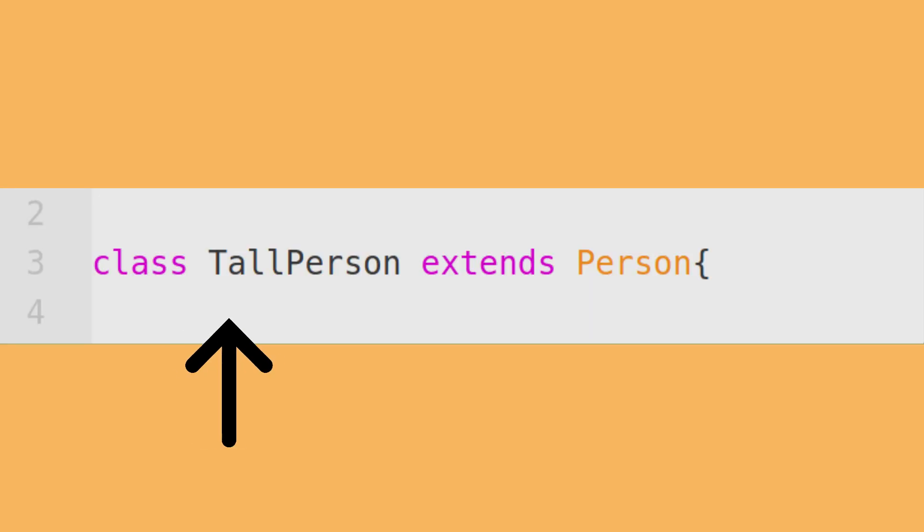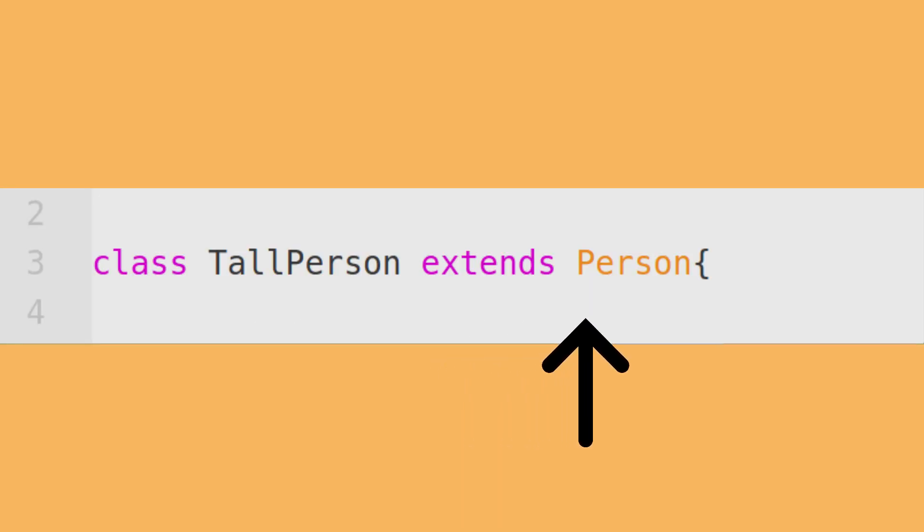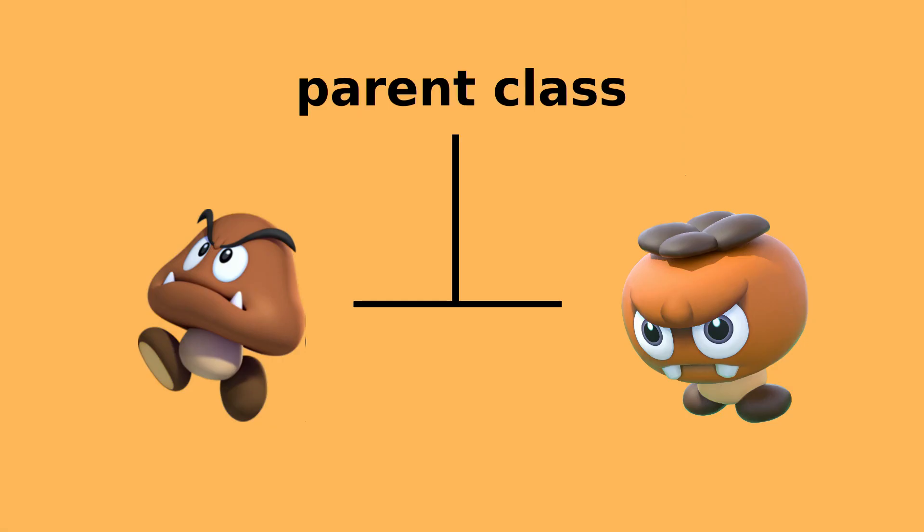In Java, you can create new classes that inherit from existing ones, inheriting all their parent's properties, so you don't have to rewrite your code for similar classes.